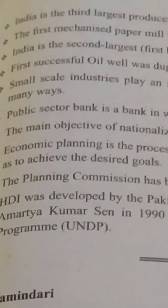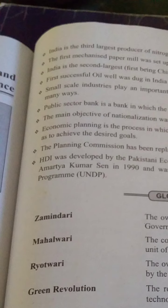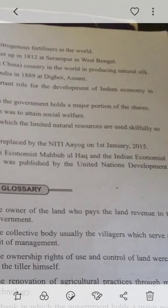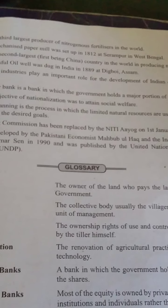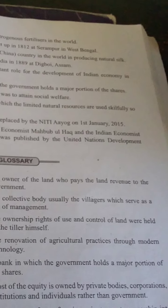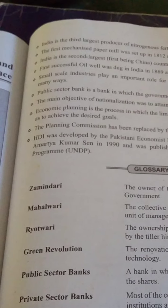Economic planning is a process in which natural resources are used to achieve desired goals. The Planning Commission has been replaced by Niti Aayog. The Human Development Index (HDI) was developed by Pakistani economist Mahbub ul Haq and Indian economist Amartya Kumar Sen in 1990, published by the United Nations Development Programme, covering education and health.